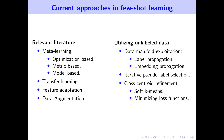Multiple different research directions have been proposed to tackle the Few-Shot Learning problem, such as meta-learning, transfer learning, feature adaptation, and data augmentation.